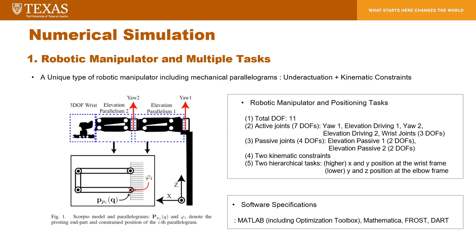We verify the proposed approach using numerical simulations. A unique robotic manipulator called Scorpio is controlled by the proposed approach. Scorpio has 11 degrees of freedom total, with 7 active joints. There are two parallelograms in the mechanical structure; each has two passive joints and a geometric constraint for the closed-loop structure. We define two hierarchical tasks: the higher-prioritized task controls the x and y positions at the wrist frame, and the other task controls the y and z positions at the elbow frame. For the numerical simulation, we used MATLAB, Mathematica, Frost, and Dart.